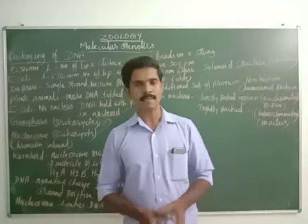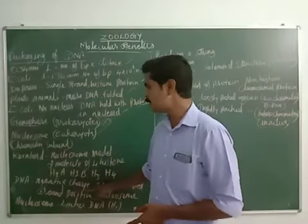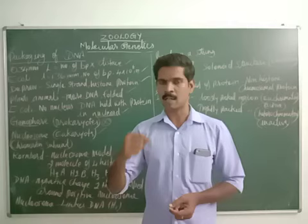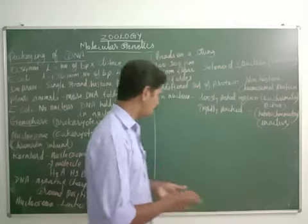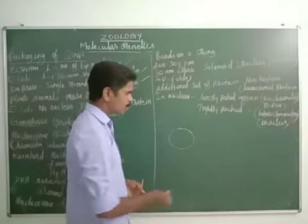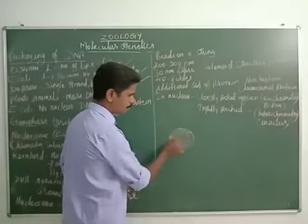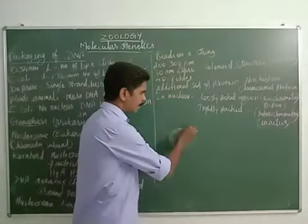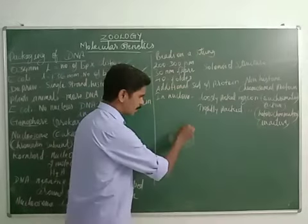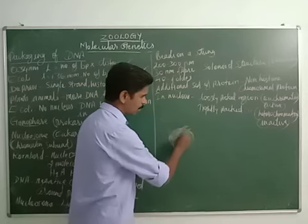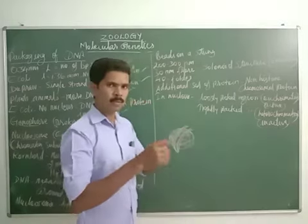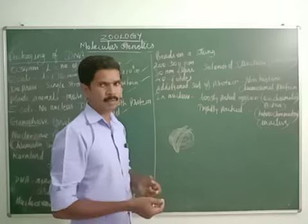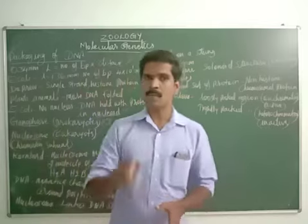DNA is a negatively charged molecule. This negatively charged DNA molecule is always wrapped around the outer surface of the nucleosome. The nucleosome is a positively charged molecule, and the negatively charged DNA molecule winds two times around the outer surface of the nucleosome.